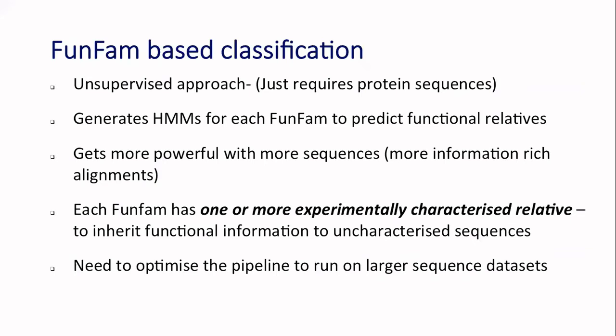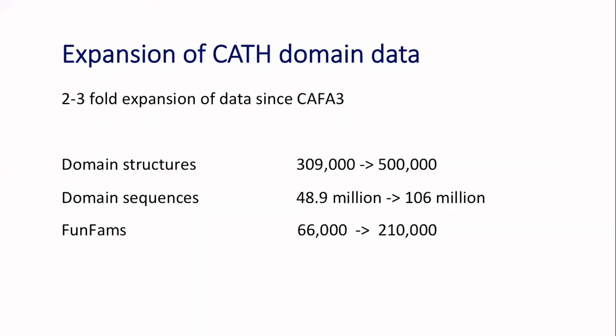It generates a hidden Markov model pattern for each functional family which we can use for CAFA function prediction, and it gets more powerful the more sequence data we have because the patterns become clearer. I should also make clear that each functional family has at least one experimentally characterized relative. We don't build functional families for all sequences in CATH — we want this to be about precision. The big improvement since CAFA-3 has been roughly a doubling of the information and nearly a trebling of the functional family information — a huge task thanks to Nicola Baudin and Ian Sillito.